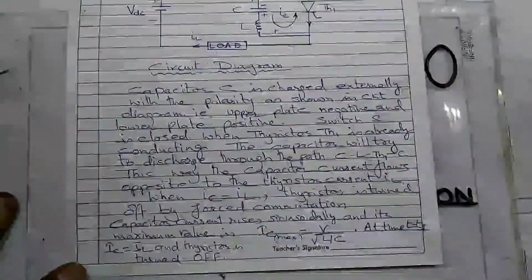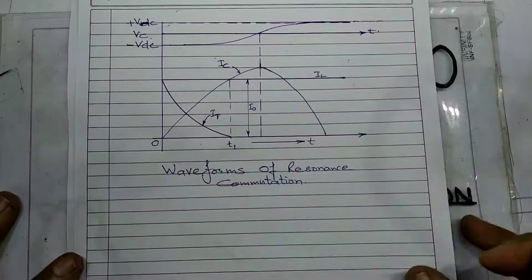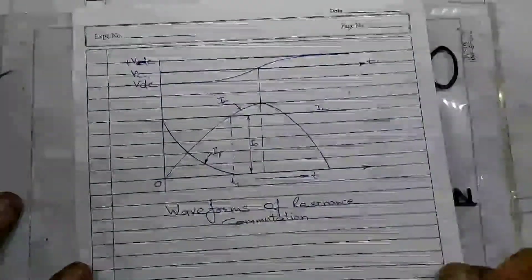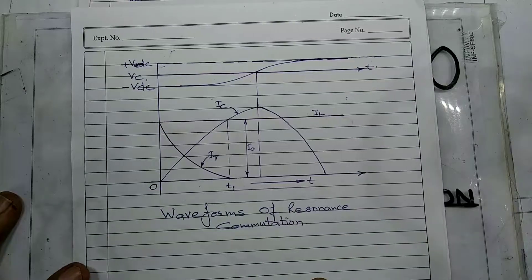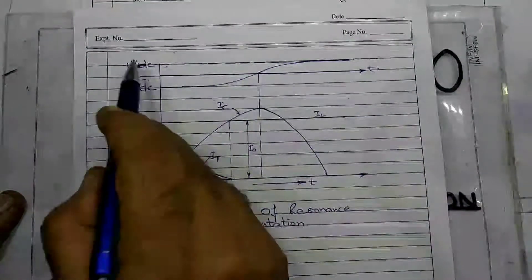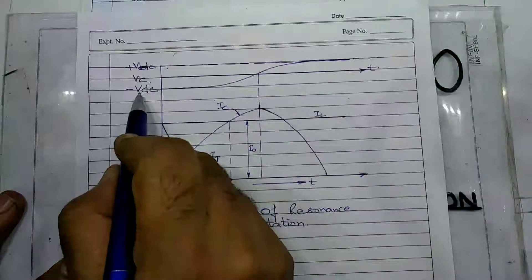Now let us see the waveforms of this circuit. Here two levels are shown, plus VDC and minus VDC.